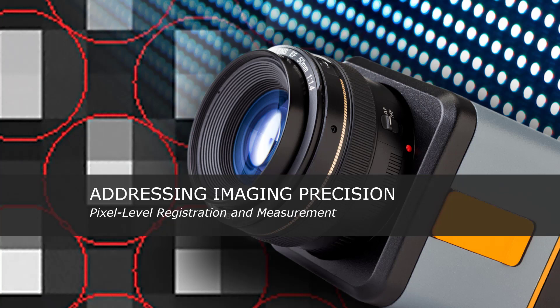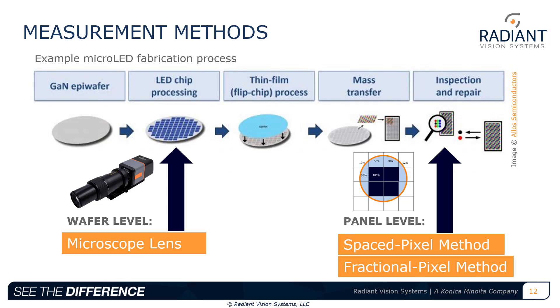The first step to measurement for micro-LED correction is isolating each pixel in a measurement image — which we refer to as pixel registration — and then maximizing the value we can acquire from each pixel area, which we call pixel measurement. For this, we need to optimize imaging precision. Radiant offers a range of solutions and methods to address imaging precision for micro-LEDs. Typically applied in wafer-level inspection, a microscope lens is used to identify micro-LED subpixels for extreme detail in a measurement image. Two other methods are applied for panel-level inspection using standard imaging optics. Each method provides benefits and disadvantages in terms of precision, speed, and complexity.